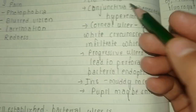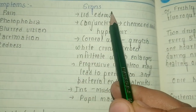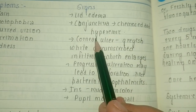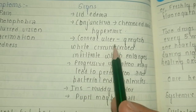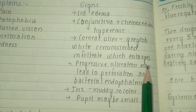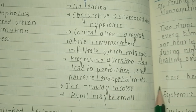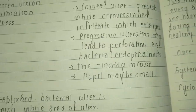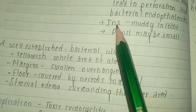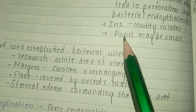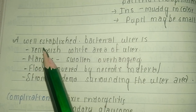For signs, we go from outer to inner structures. First, there is lid edema. On the conjunctiva there is chemosis — edema of the conjunctiva — and hyperemia. In corneal ulcer there is a gray-white circumscribed infiltrate which enlarges, and progressive ulceration may lead to perforation and bacterial endophthalmitis, which is an ocular emergency. The iris looks muddy in color, and the pupil may be small due to bacterial toxins causing iritis.